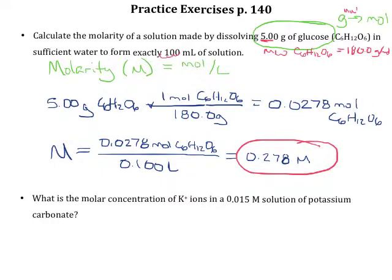For the next one, they want to know what the concentration is of K+ ions, and they're already giving us a concentration. So we're starting with a concentration, molarity is a concentration, and they're asking us for a concentration. So what are we actually doing here? Well, the concentration they give us, the 0.015 molar solution, is for potassium carbonate.